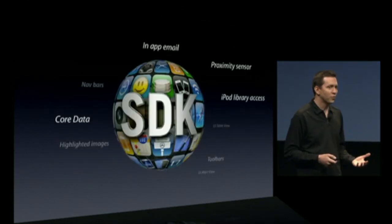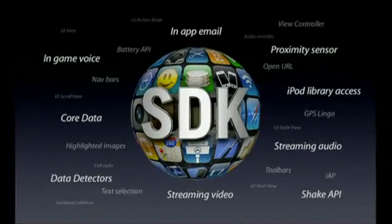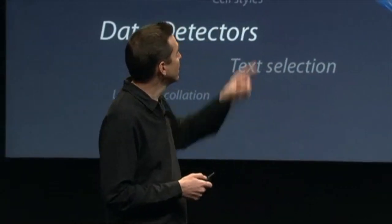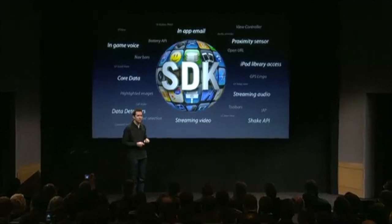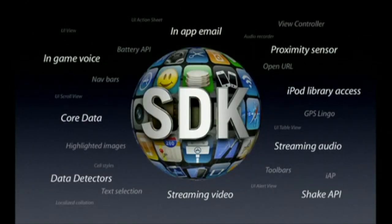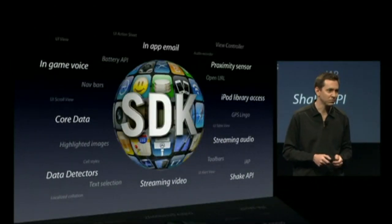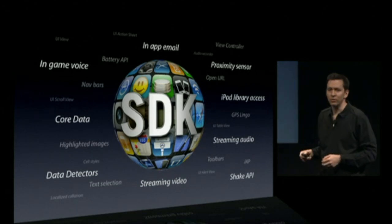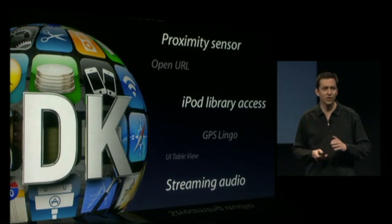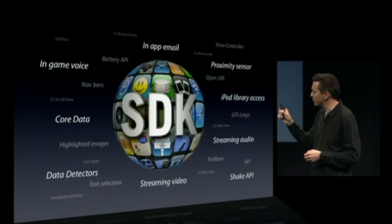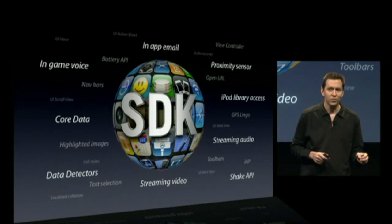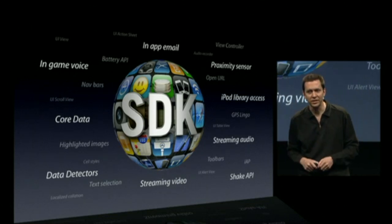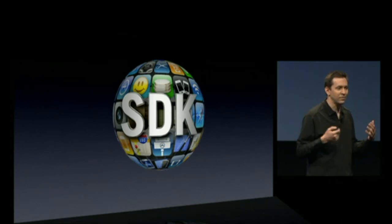These are only a few of the more than 1,000 APIs in the iPhone 3.0 SDK. A few more: in-app email — a sheet you can use right from your application so you don't have to leave it to send an email. Proximity sensor is now a public API. iPod library access — developers can now access, browse, and play music right out of the built-in iPod library. Streaming audio and video — we're introducing a new standard for streaming audio and video over HTTP, which even goes through firewalls. We've made the shake API public. We've added data detectors and Core Data. And in-game voice — if you have a game that plays over Wi-Fi, there are built-in voice chat APIs to add voice into your game. Again, just a few of the over 1,000 APIs we're adding for developers.